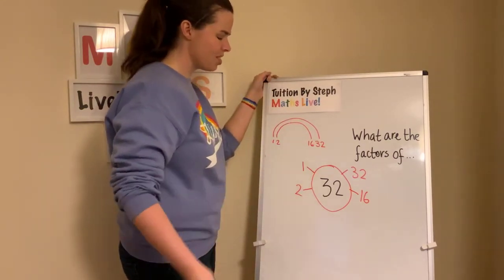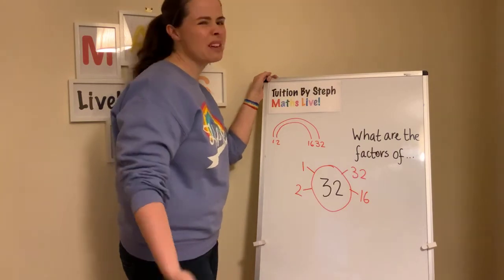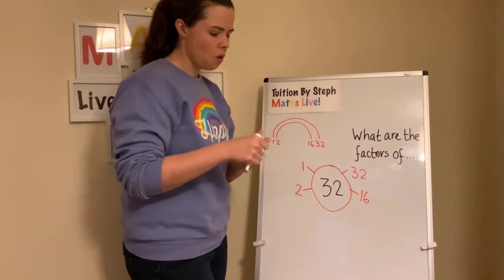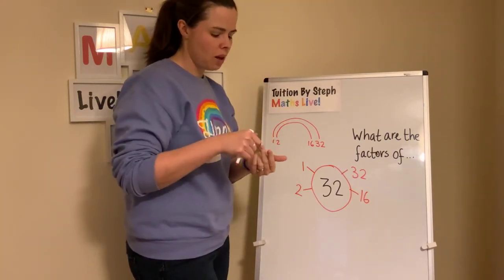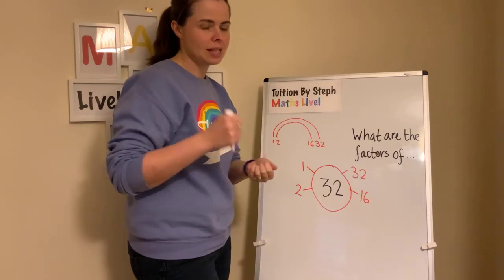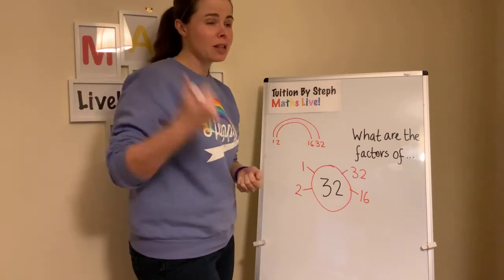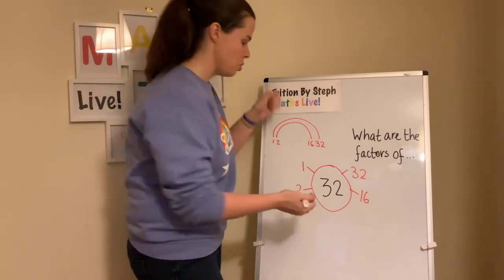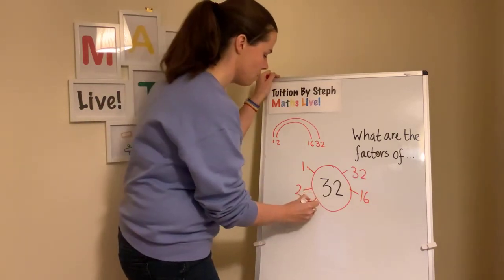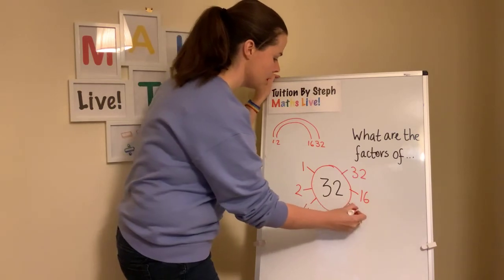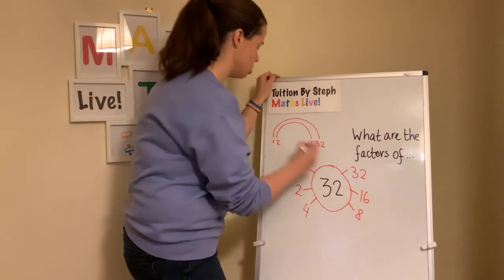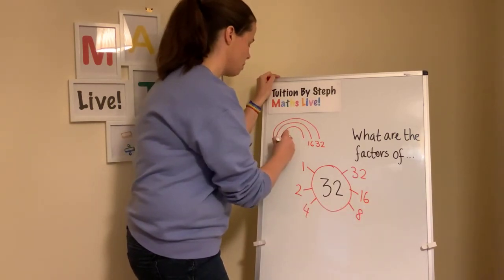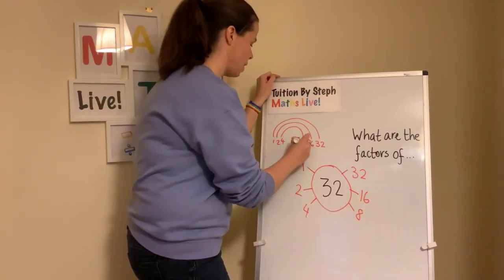Is it in the threes? No, 11 threes is 33. Is it in the fours? 4, 8, 12, 16, 20, 24, 28, 32. Yes — 4 times 8 is 32, so you do 4 and 8.